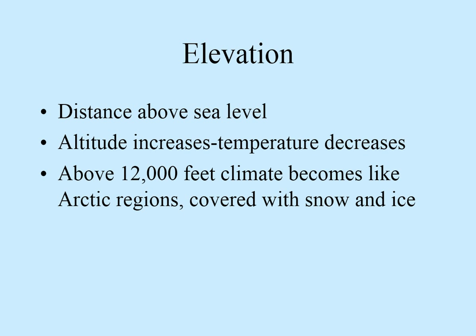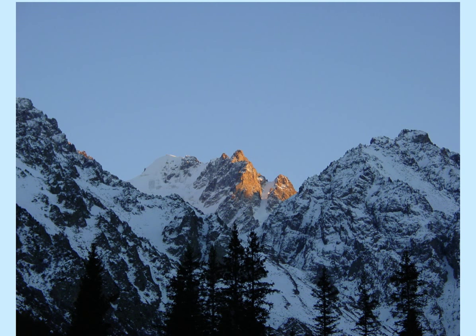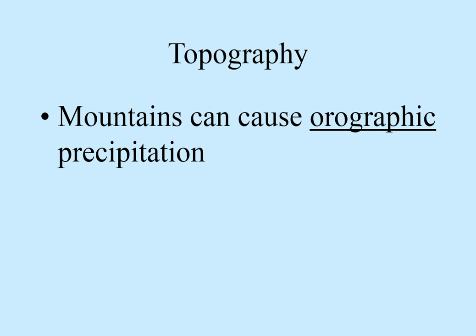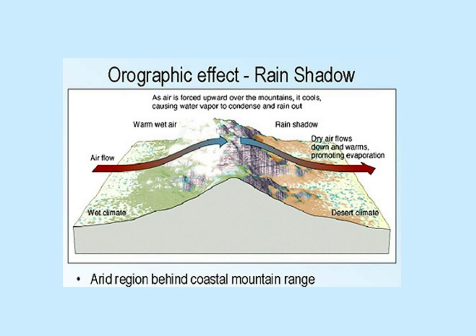Elevation again — the higher you go, the cooler it is. Topography: mountains can cause orographic precipitation. Water-laden clouds come in, hit the mountain, all the water comes down as rain on the windward side. On the leeward side it becomes very dry because the precipitation is gone — this is your rain shadow.